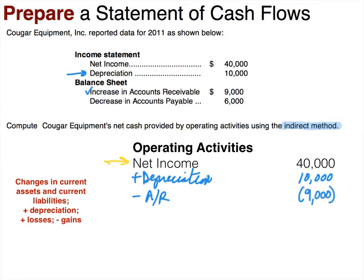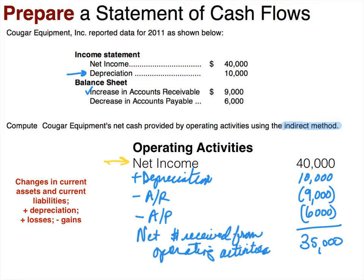There's also a decrease in accounts payable. Accounts payable decreases when we pay toward them, and paying cash decreases cash. So a decrease in accounts payable is a decrease in cash — we subtract that $6,000. When we sum everything up, the result is a positive number, which means we have net cash provided by operating activities. If the sum had been negative, we would call it net cash used by operating activities.